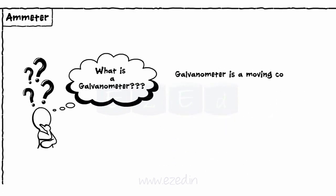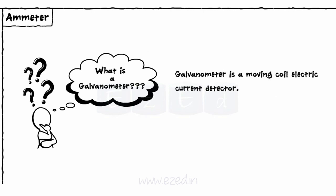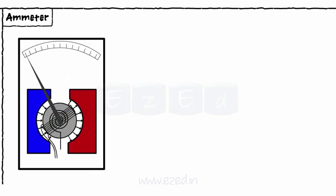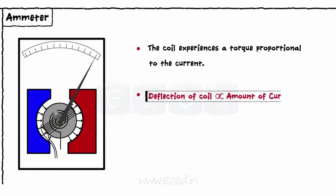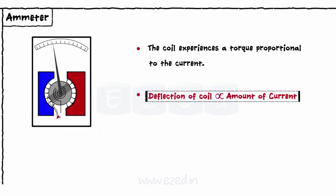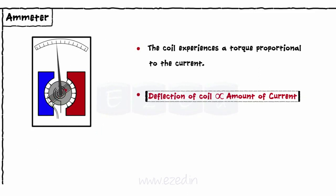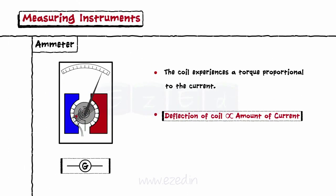Galvanometer is a moving coil electric current detector. When current is passed through the coil in a magnetic field, the coil experiences a torque proportional to the current. Thus, the deflection of a coil becomes proportional to the amount of current passing through it and the meter gives the reading of a current. This meter is represented by a symbol, capital G, in a circle as shown.